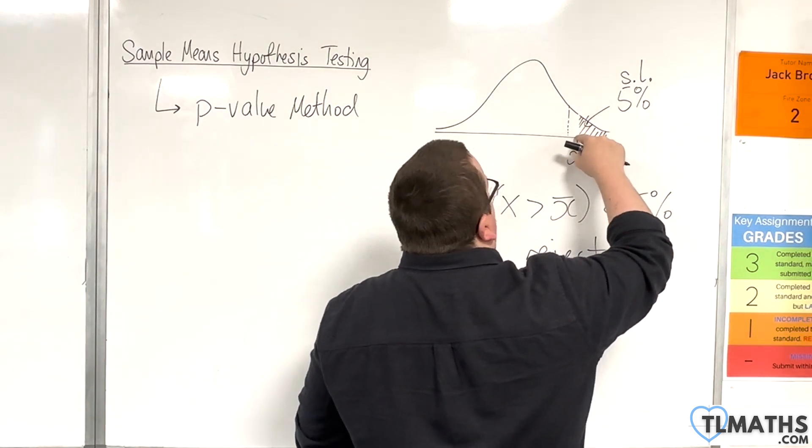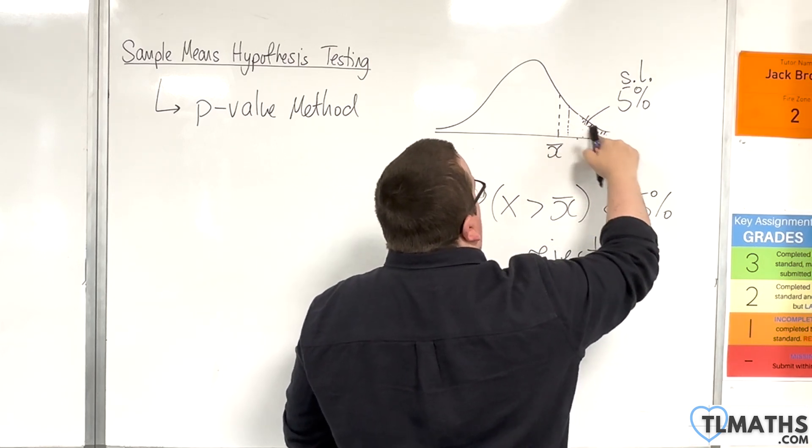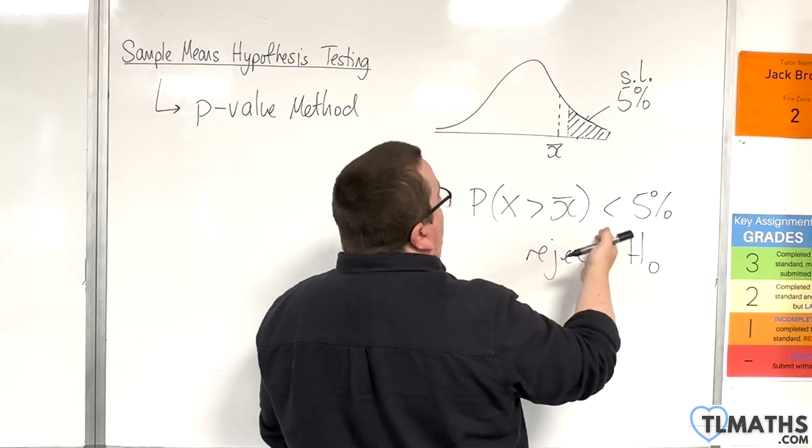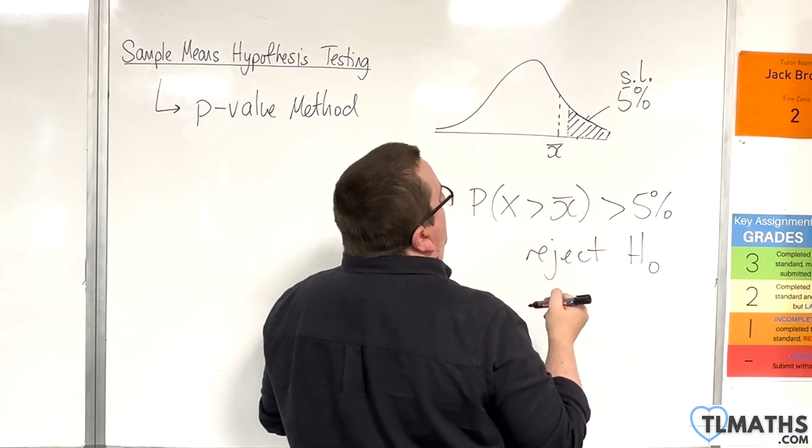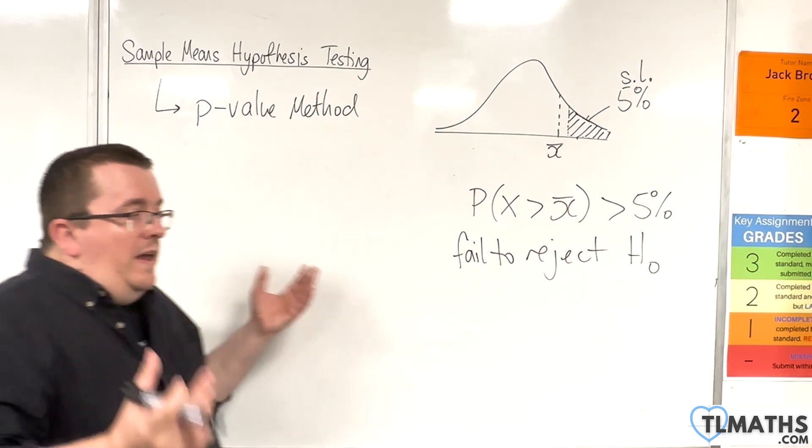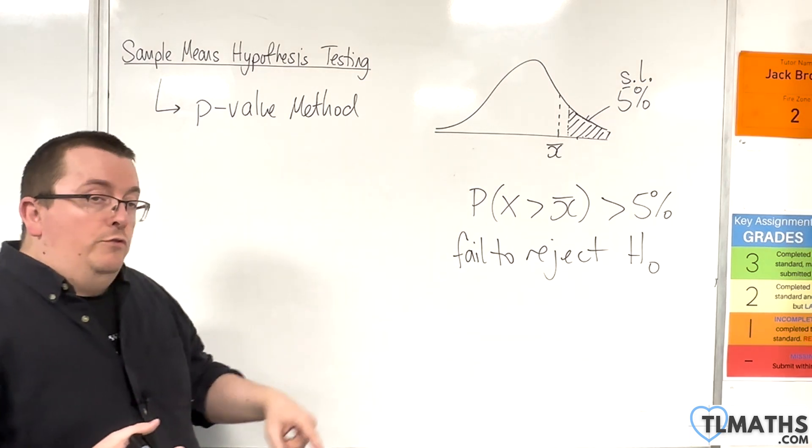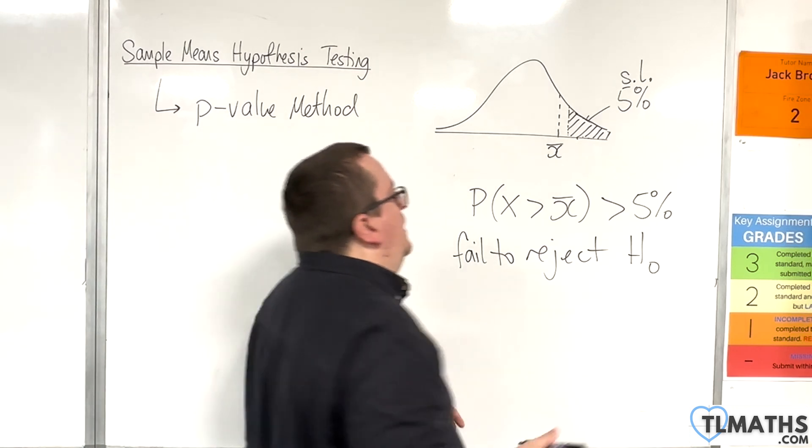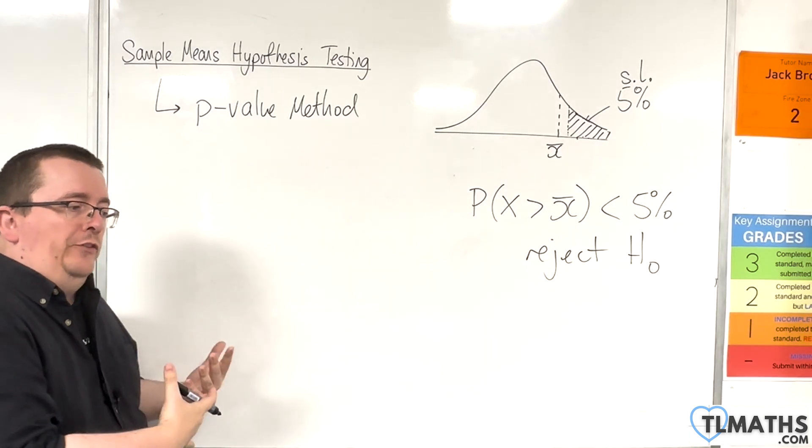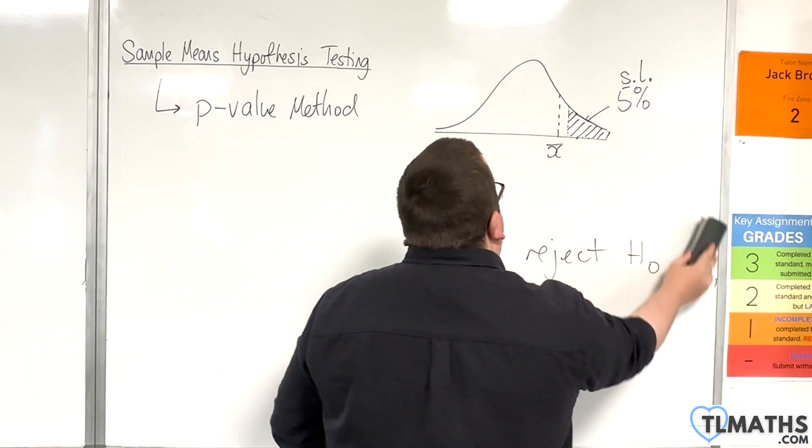If, on the other hand, x-bar had been here, and remember, this is the 5%, so that region there, this is 5%. If the probability of x-bar being greater than x-bar is greater than 5%, then we fail to reject H0. So, that is the same as it was in binomial hypothesis testing. If your p-value is less than the significance level, you reject, and if it's greater than, you fail to reject. Because what we're saying is that if it is less than 5%, then it's unlikely enough for us to suggest that the null hypothesis is wrong. So, that is using the p-value method.